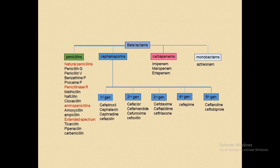Cephalosporins are further divided into five generations. The first generation includes cefadroxil, cephalexin, and cephradine. The second generation includes cefaclor, cefamandole, and related agents. The third generation includes cefotaxime, ceftazidime, and ceftriaxone. The only fourth generation cephalosporin is cefepime. The fifth generation includes ceftaroline and ceftobiprole.